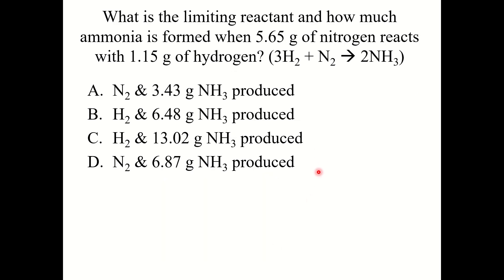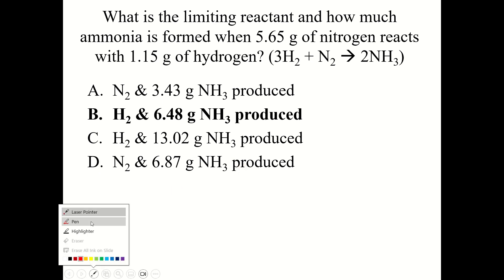Let's try this question. What is the limiting reactant and how much ammonia is formed when 5.65 grams of nitrogen reacts with 1.15 grams of hydrogen? The correct answer is B: H2 is the limiting reactant and 6.48 grams of ammonia is produced.